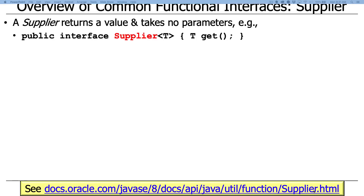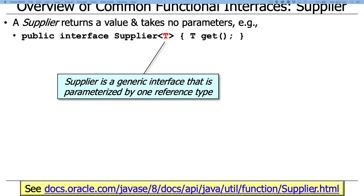Supplier is a very interesting functional interface because it returns a value and appears to take no parameters, although we'll see in a minute that you can actually pass parameters through something called effectively final variables. It's parameterized by type T, so it's a generic interface parameterized by a single reference type.